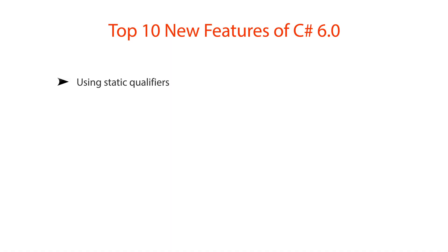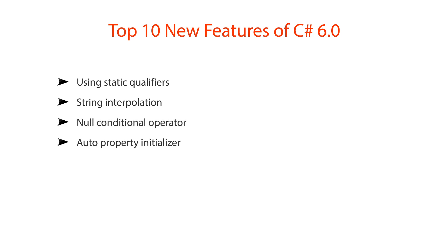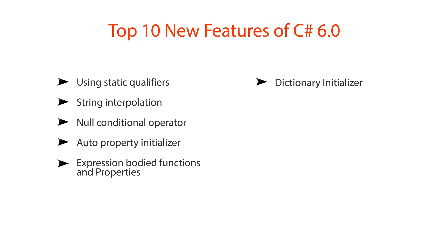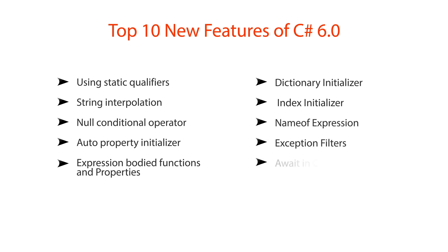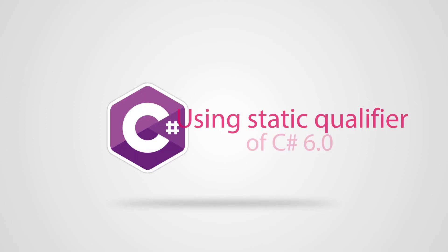In the first part I will be covering: using static qualifier, string interpolation, null conditional operator, auto property initializer, and expression bodied functions and properties. In the second part we will discuss dictionary initializer, index initializer, nameof expression, exception filters, and await in catch and finally block. C# 6 adds many small but very useful language features to remove boilerplate and clean up your code in a very efficient way.